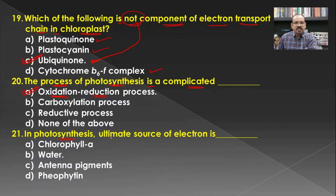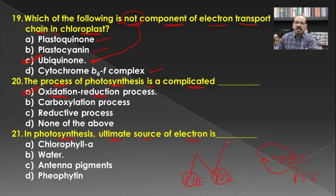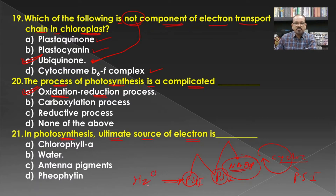In photosynthesis, the ultimate source of electrons is what? In cyclic electron transport involving PS1, electrons cycle back. In the Z-scheme involving PS2 and PS1, the electron is used for the reduction of NADP. When this electron is consumed, it is replenished to PS2 by photolysis of water. Hence water is the ultimate source of electrons in the process of photosynthesis.